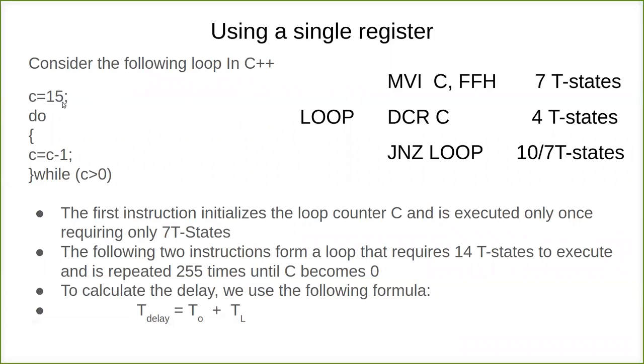Similarly we can set the loop in our microprocessor. Instead of keeping a variable for counting, we keep a register. MVI C, FFH means this value is moved to the C register. This takes 7 T-states. This is a two-byte instruction.